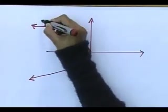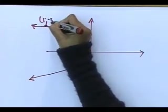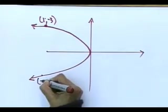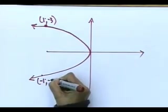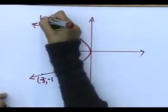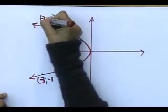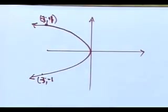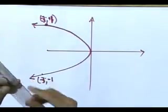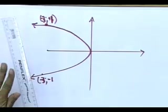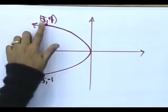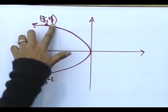Do you remember this is the point (1, −3)? And what was this point now again? Negative 3 and negative 1. Negative 3 and positive 1. Let's look. Take your ruler. We call this the vertical line test. Negative 3 and 1. Negative 3 and negative 1.